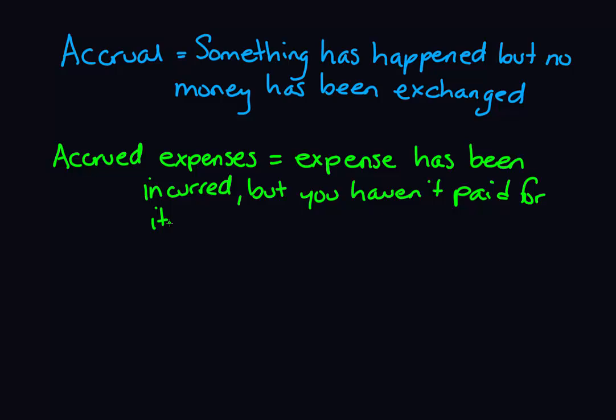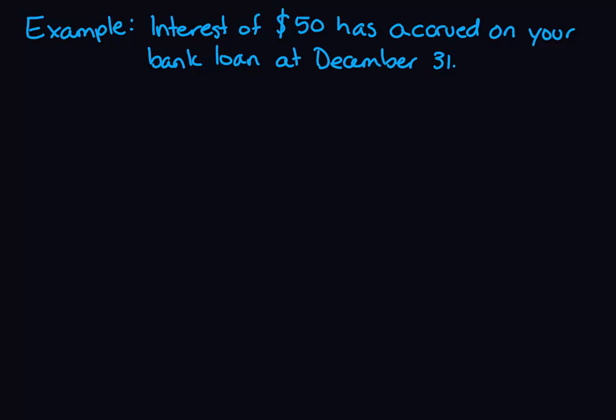So let's look at an example. In this example, interest of $50 has accrued on your bank loan at December 31st. The word accrued indicates that this expense has been incurred but has not yet been paid. This means two accounts are going to be affected: an expense account and a liability account, a payable account.